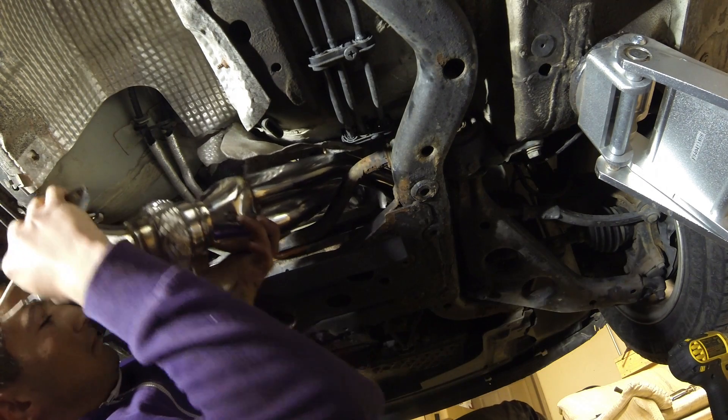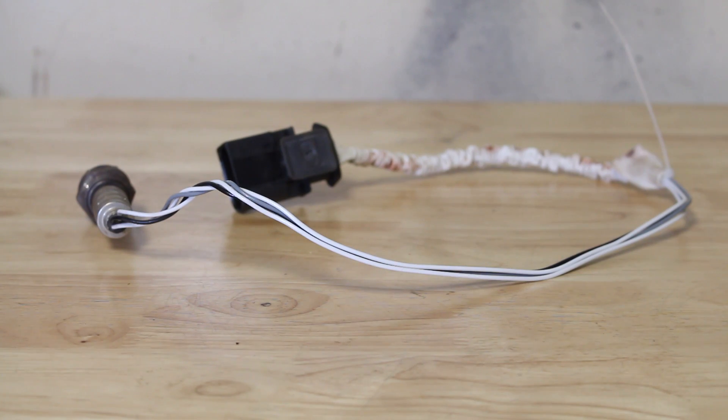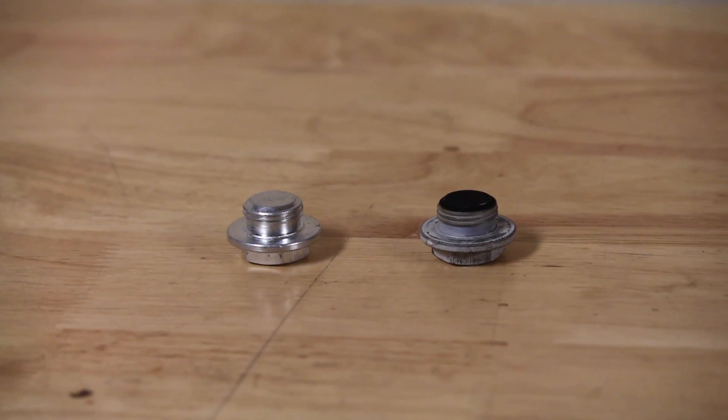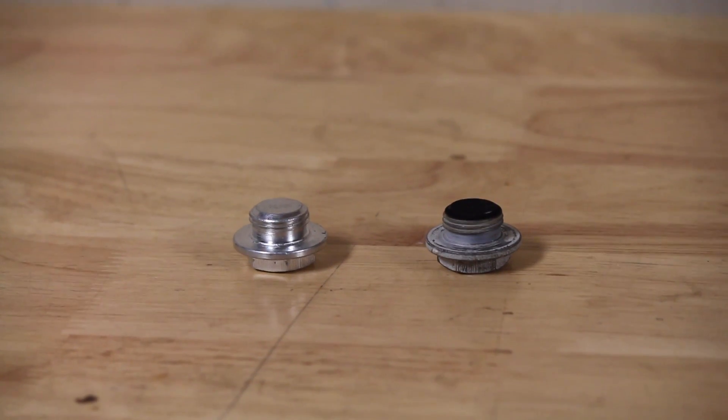When I installed the Megan Racing headers on the Copper Cooper, the oxygen sensor wires were not long enough for me to install it into the primary oxygen sensor port. If you saw the video, you would know that I just plugged it so the exhaust didn't have a hole.